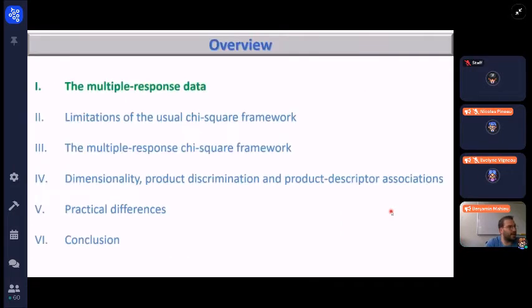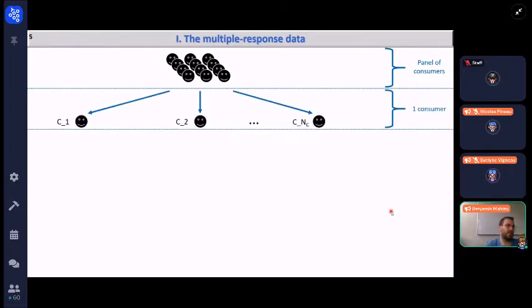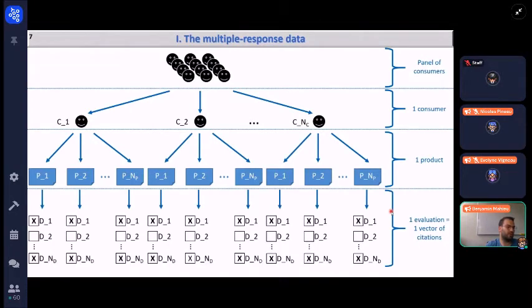As I recall, here are the data under interest. We are recruiting a panel of consumers and each of these consumers evaluate usually the same sets of products, and for each of these products, a consumer provides a vector of citations which are the descriptors the consumer judges as describing the product under interest.